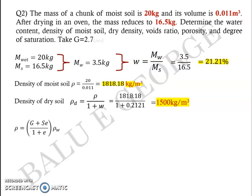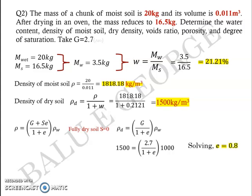We know that the basic relation rho equals g plus sc by 1 plus c times rho w. From this density, when you substitute s equals 0, what you get is dry density g by 1 plus e times rho w. You know the dry density is 1500, you know g which is given, and you know density of water. Take care about the units: the unit is kg per meter cube, and density of water is 1000 kg per meter cube. So 1500 equals 2.7 by 1 plus e multiplied by 1000, and you will get void ratio e as 0.8.